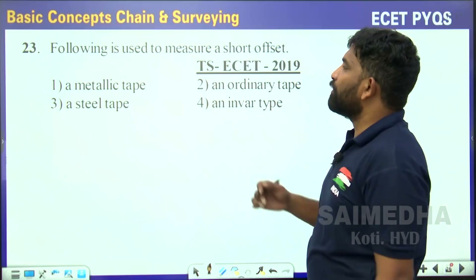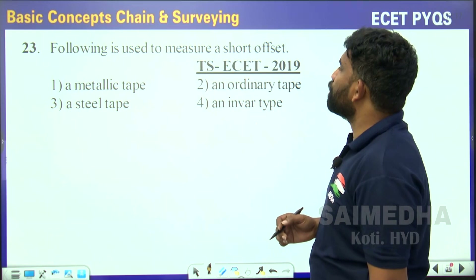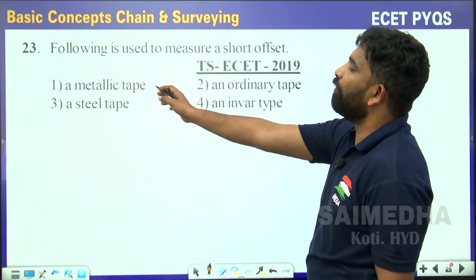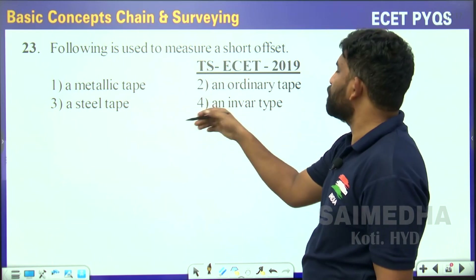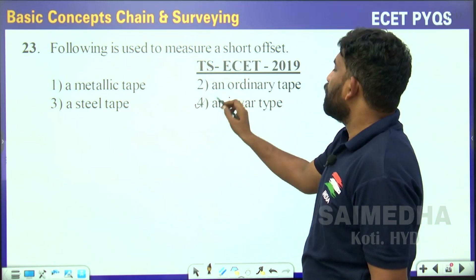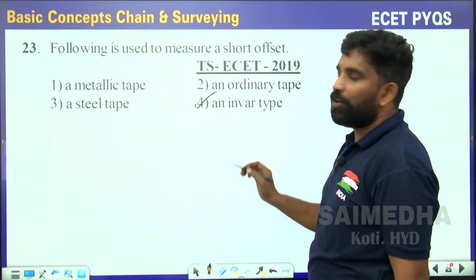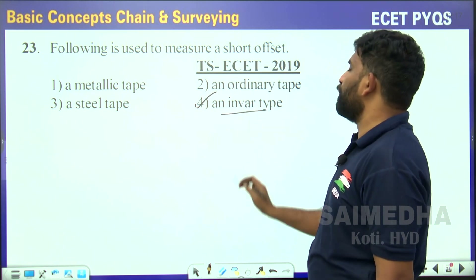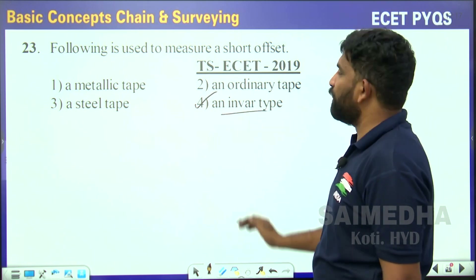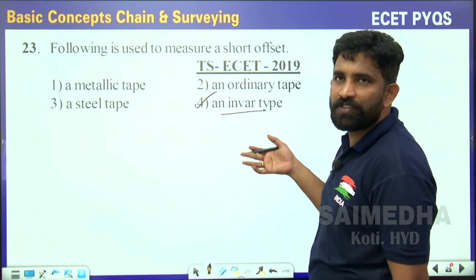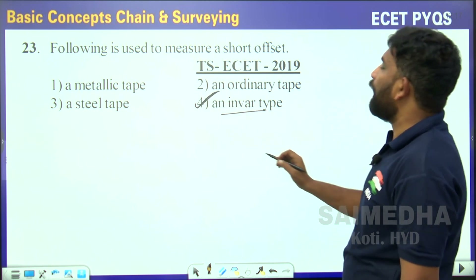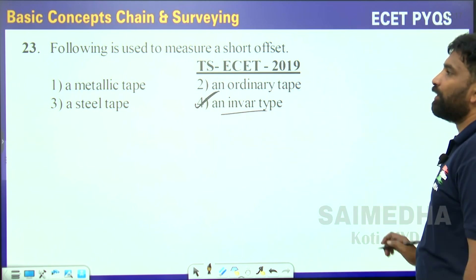Now let us start the video. The next question: which of the following is used to measure a short offset? Of all the four options, the most accurate instrument is Invar, because it is made up of alloys of steel and nickel. So you will choose Invar as the correct answer.